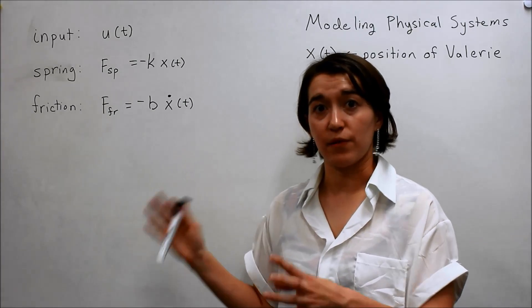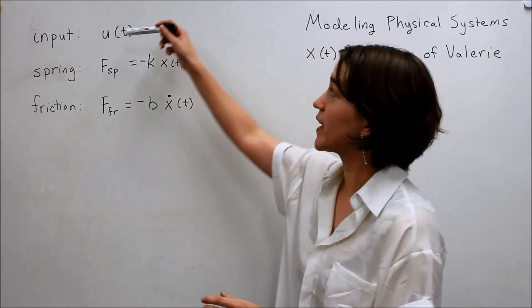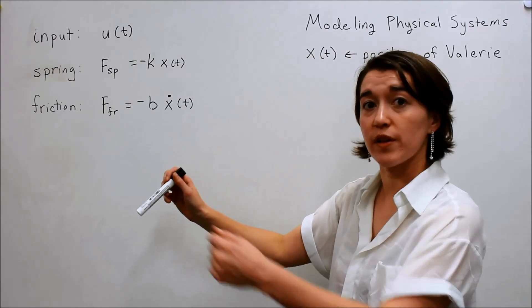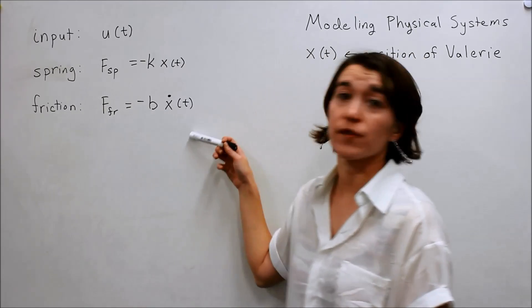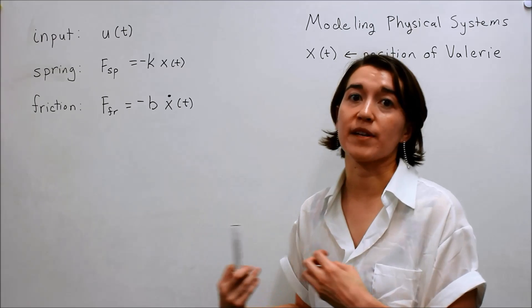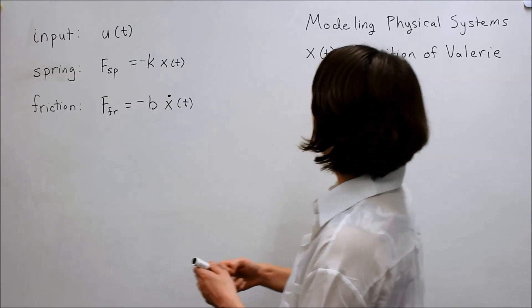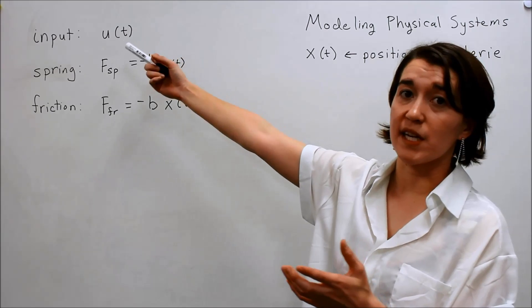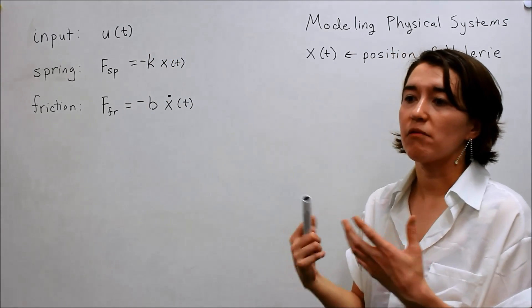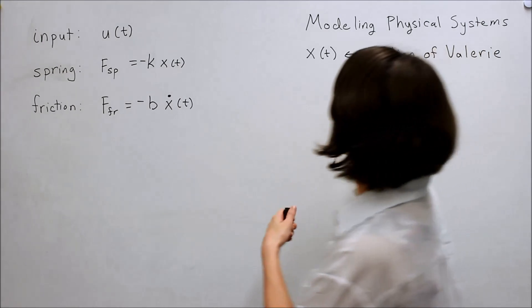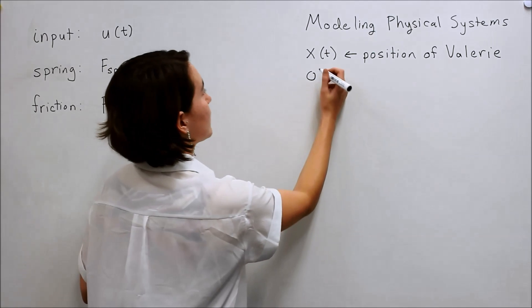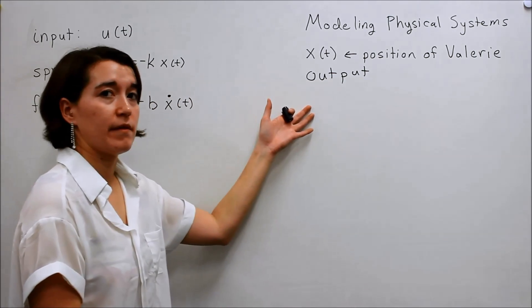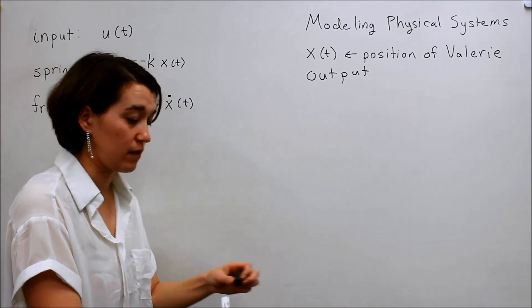I've written all the equations that we just talked about. We've modeled our system on the board. So we have our input, which is our input force, and our spring constant, so the force due to the spring that's holding Valerie back, and then the force of friction. So we have some forces. We kind of understand the dynamics that are happening in the system. And we defined x as the position of Valerie. And we have an input clearly stated here, but what's our output? Well, we care about, we want to see how her position changes. So we're going to denote this x(t) as the output.